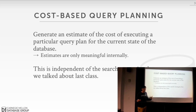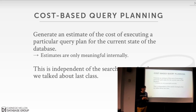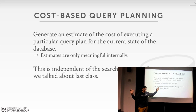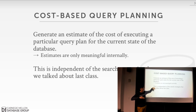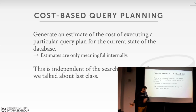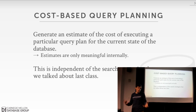One of the major contributions of the System R project was the idea of using a cost-based query optimizer that enumerates over many different alternatives for how to execute your query plan, then chooses the best one based on an estimate. These estimates are only meaningful internally to the database system — they're not tied to wall clock time or any real-world metric. That means you can't compare cost model estimates across MySQL and Postgres — they use completely different metrics. Also, these cost models are independent of the search strategies from the last two classes.